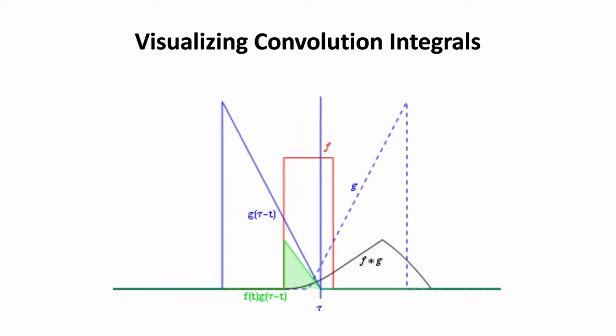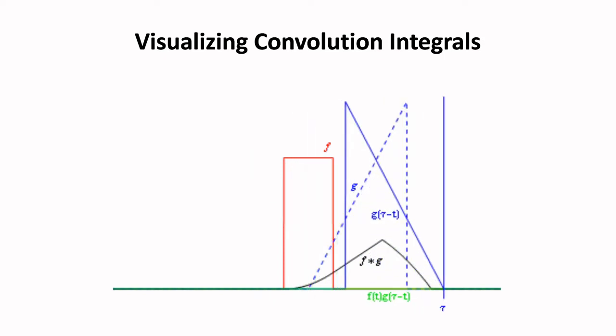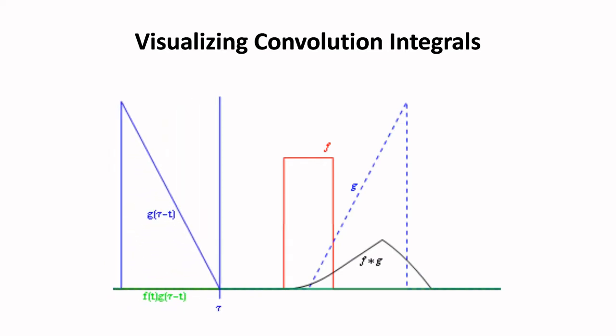This offset continually changes with time, making it appear as if the kernel slides along the x-axis. The area bound between the kernel and main function is plotted, yielding the convolution integral.